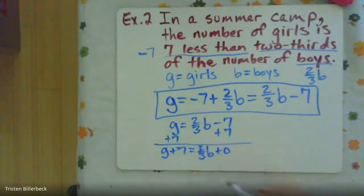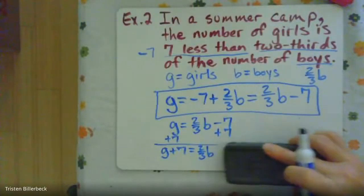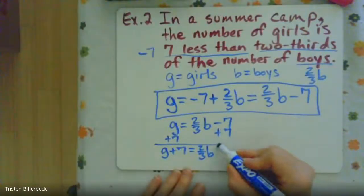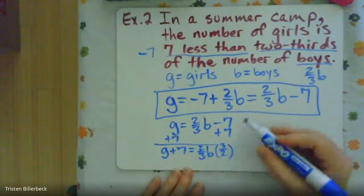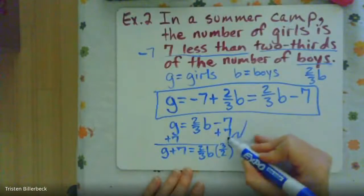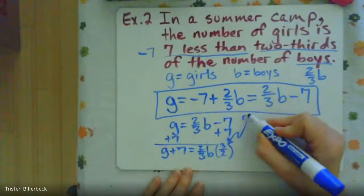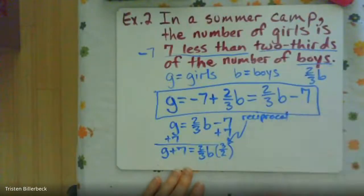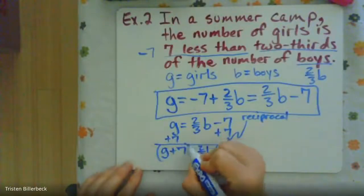So now what we need to do is get rid of this two-thirds. So we're going to use a reciprocal. And I'm going to erase this zero because it doesn't do anything to our equation. So the reciprocal of two-thirds is three-halves. So this is called a reciprocal. Okay, if we do it to this side, we have to do it to this side.